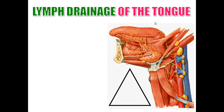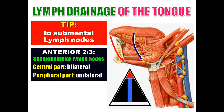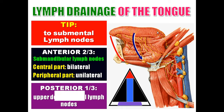Regarding the lymphatic drainage of the tongue: the tip of the tongue drains into the submental lymph nodes, which then drain into the submandibular lymph nodes. The anterior two-thirds of the tongue drain into the submandibular lymph nodes — the central part drains bilaterally, and the peripheral part drains ipsilaterally. The posterior one-third of the tongue drains into the upper deep cervical lymph nodes.